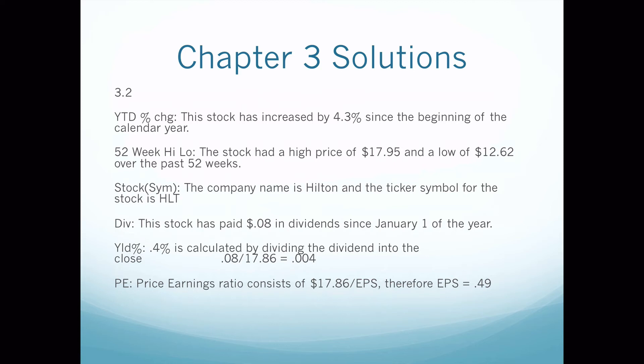The 52-week high/low — students sometimes just put the stock at a high of 17.95 and a low of 12.62 without explaining it's over the past 52 weeks. Those last five words will make the answer right or wrong, as with the year-to-date percentage change. The stock and symbol: Hilton, ticker HLT. For the dividend, it was 0.08 — the stock paid eight cents in dividends since January 1st of the year. The dividend is from the beginning of the calendar year, not 12 months like the 52-week high/low.